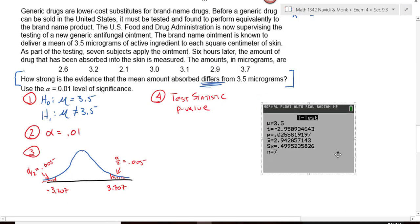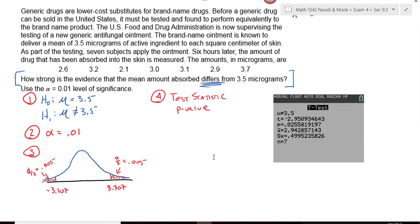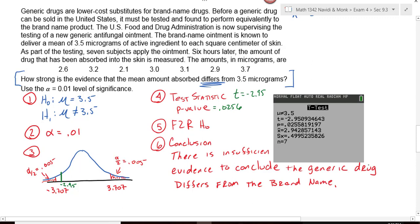Based on this output, what is our test statistic? Negative 2.95. So my test statistic is over here. Negative 2.95. Based on this test statistic, would I reject or fail to reject? Oh, by the way, what's our p-value? Based on this p-value and this picture, would I reject or fail to reject the null hypothesis? Failed to reject the null hypothesis. We could conclude that there is insufficient evidence to conclude that the generic drug differs from the brand name. Generic drug being different from the brand name was our alternative hypothesis. Because we failed to reject the null, I didn't prove the alternative, so I can't conclude that.